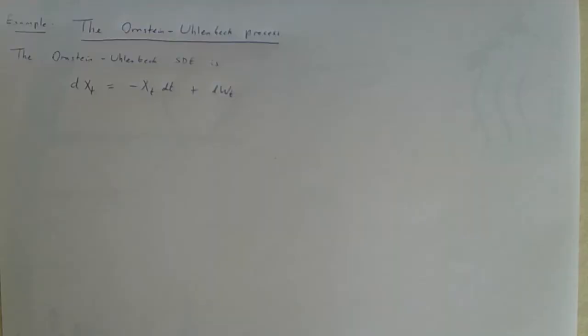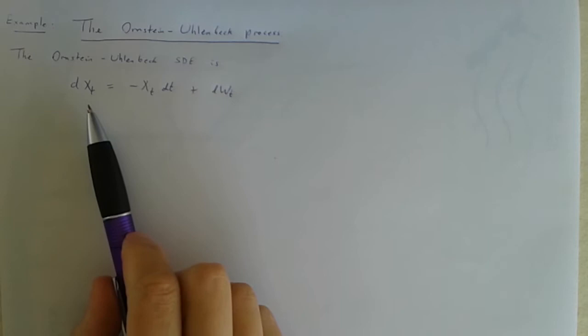In this video I'm going to do an example of something called the Ornstein-Uhlenbeck process. What this is is a stochastic differential equation actually. It's this equation.